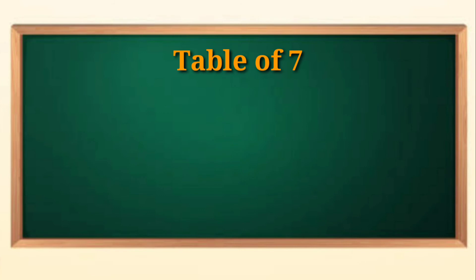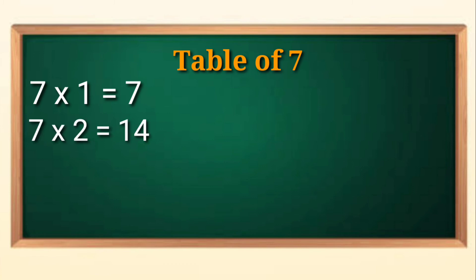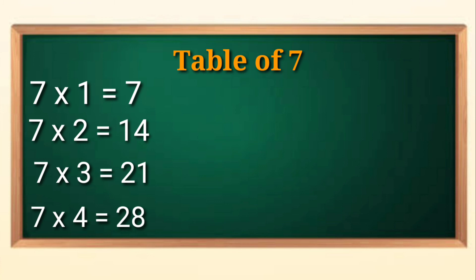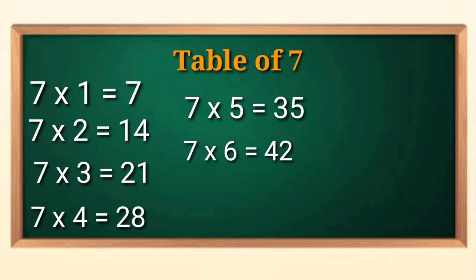One small table of seven. Seven ones are seven. Seven twos are fourteen. Seven threes are twenty-one. Seven fours are twenty-eight. Seven fives are thirty-five. Seven sixes are forty-two.